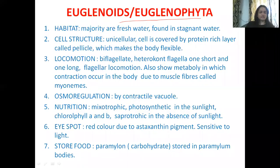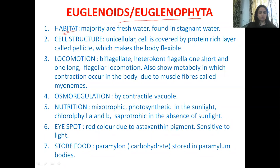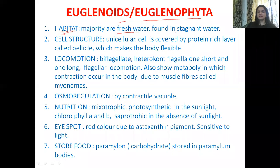The first character is habitat — where you get the organism. In this group, you get freshwater organisms, and more specifically, you get them in stagnant water — water that is not flowing.